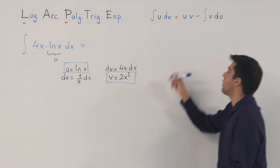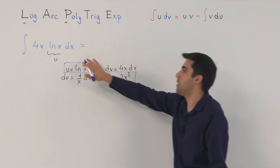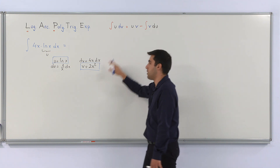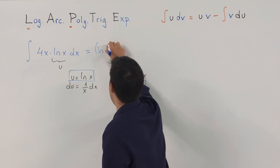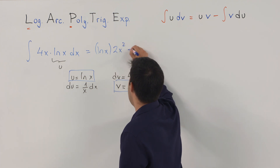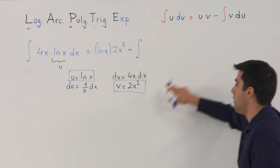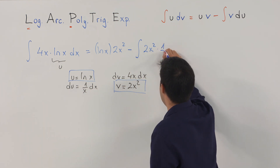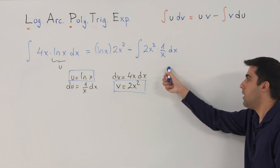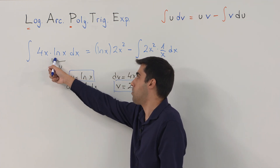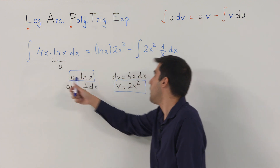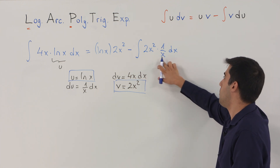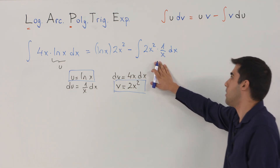Now we have determined our functions u and v. Applying the integration by parts formula, this integral equals u times v — in this case ln(x) times 2x squared — minus the integral of v, which is 2x squared, times du, which is 1 over x dx. As you can see, the logarithmic function has disappeared from the second integral.